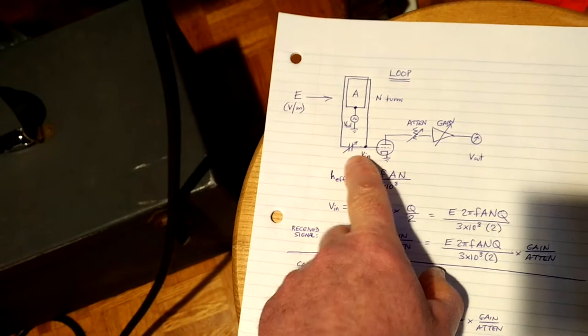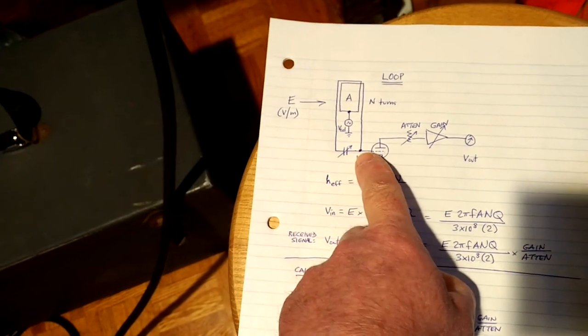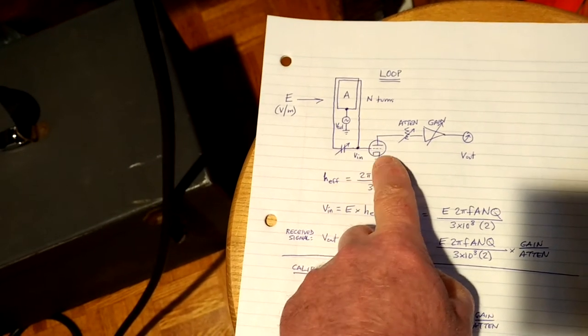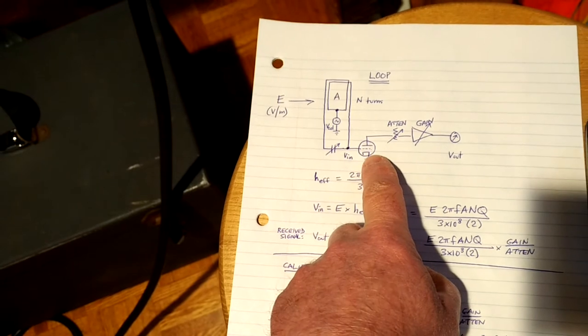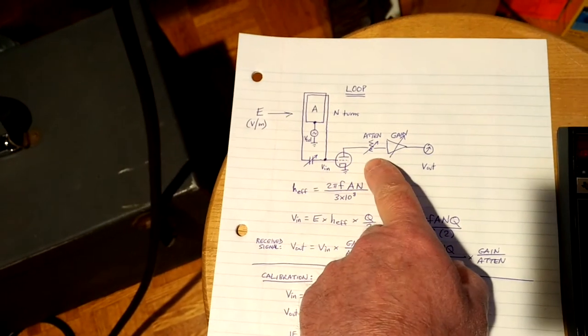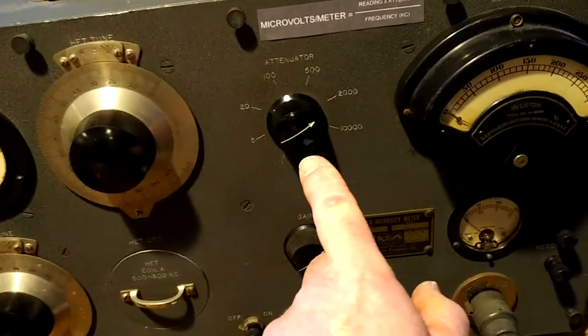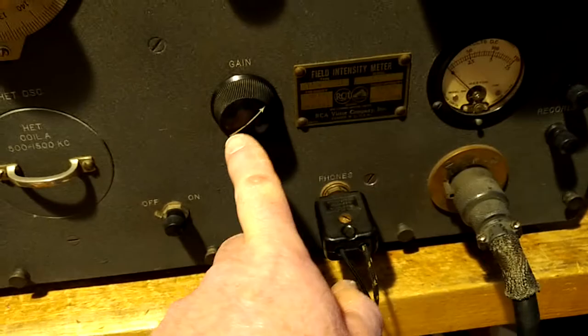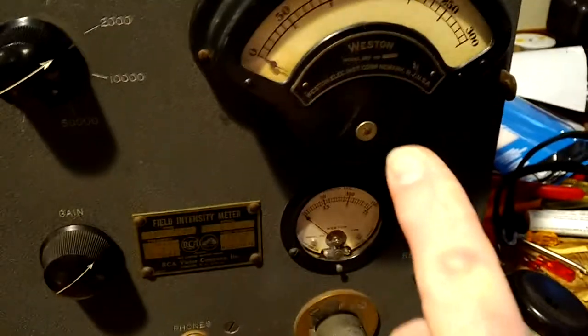It's resonated with a capacitor. And so then one half of the loop is amplified, because it's balanced. One half is amplified, and then there's a step attenuator, which is this, and the variable gain of the IF, which is this. And then the output indicator is this meter here.